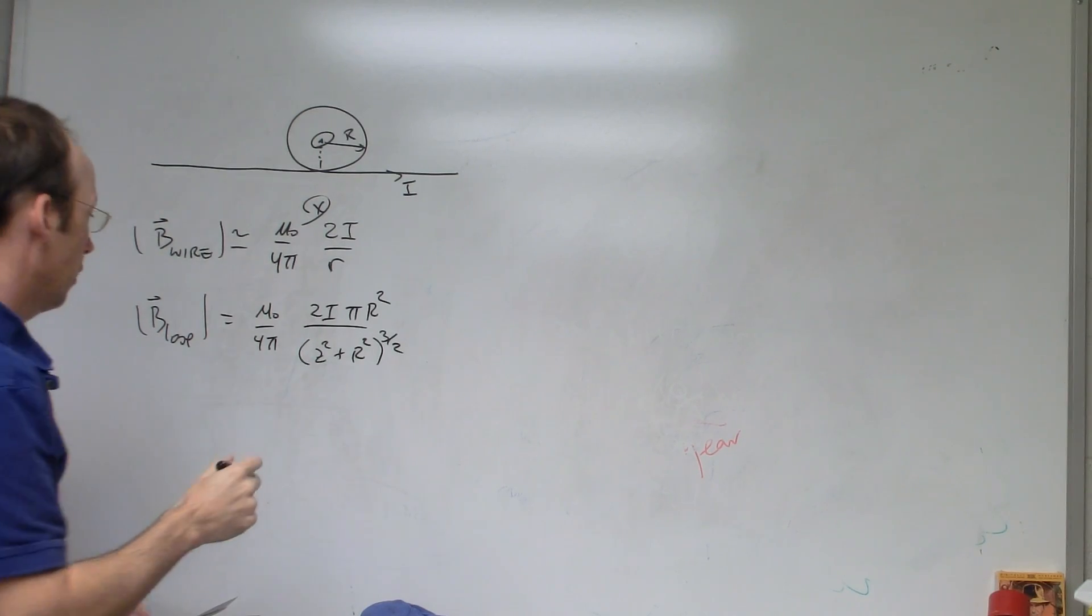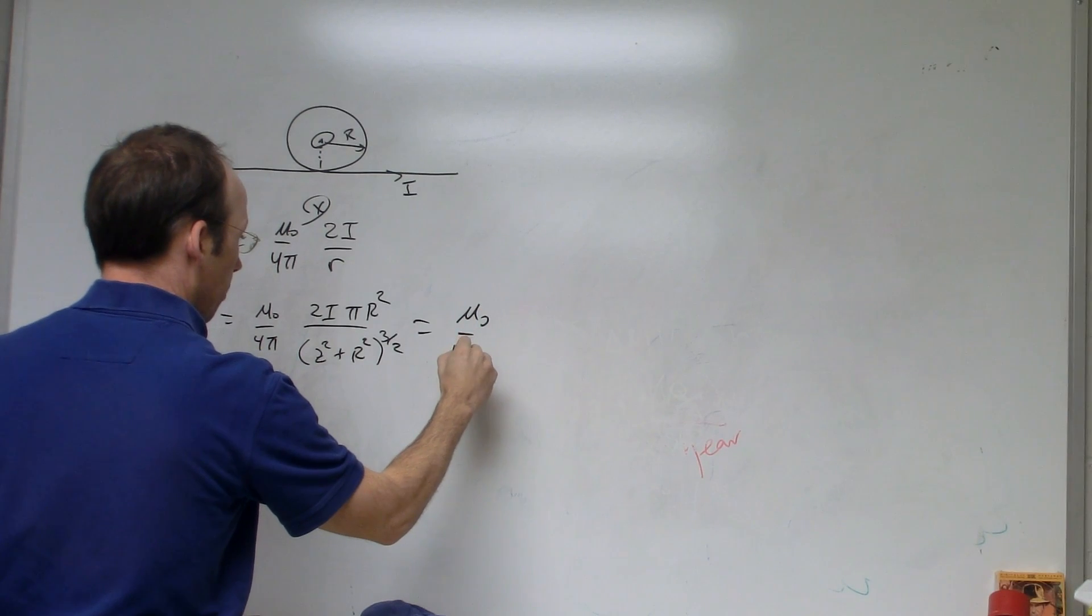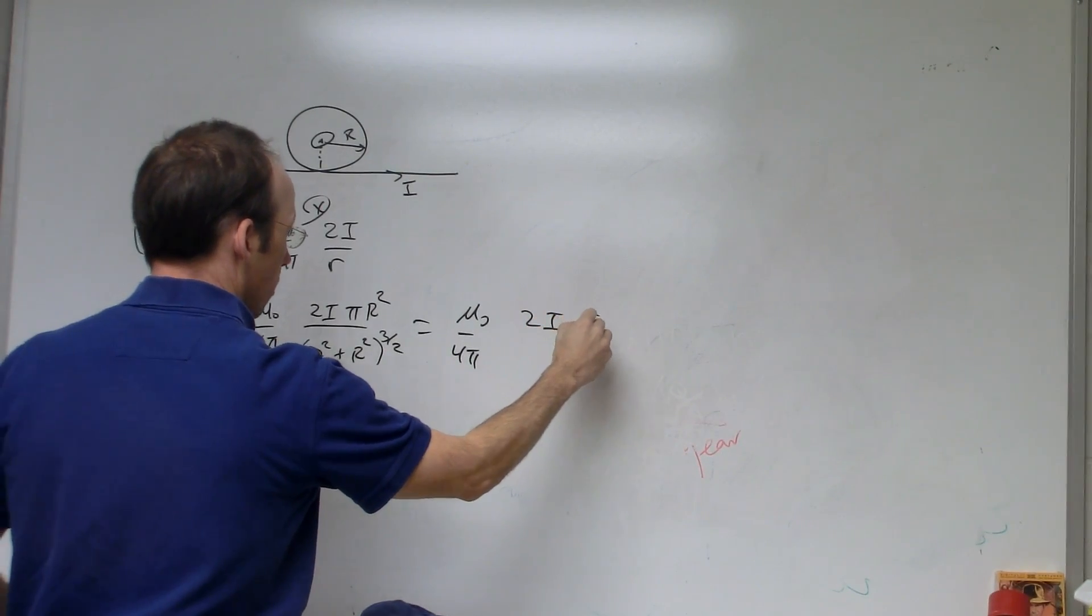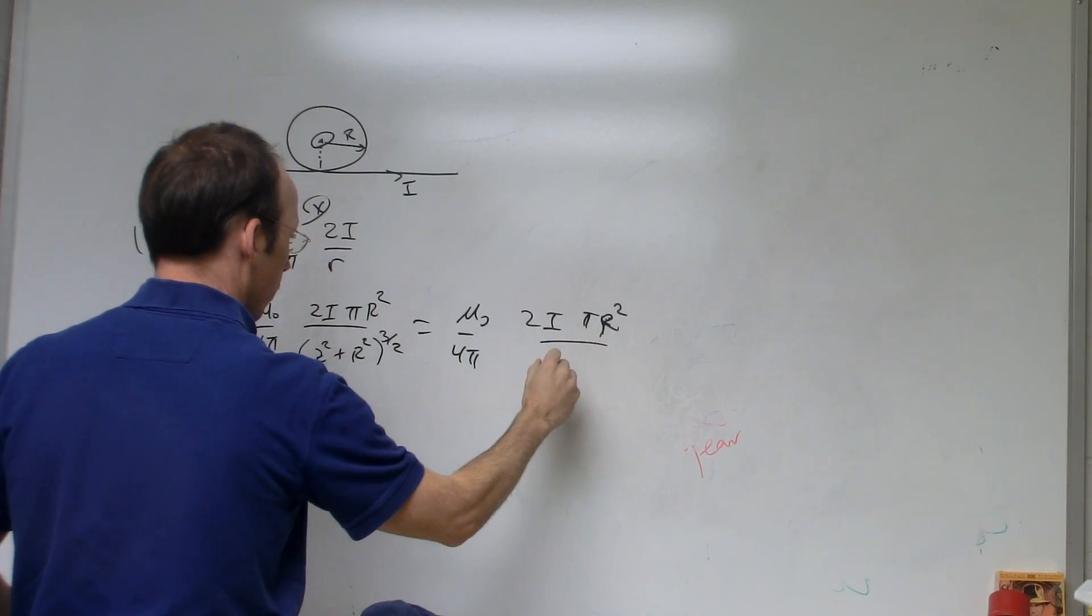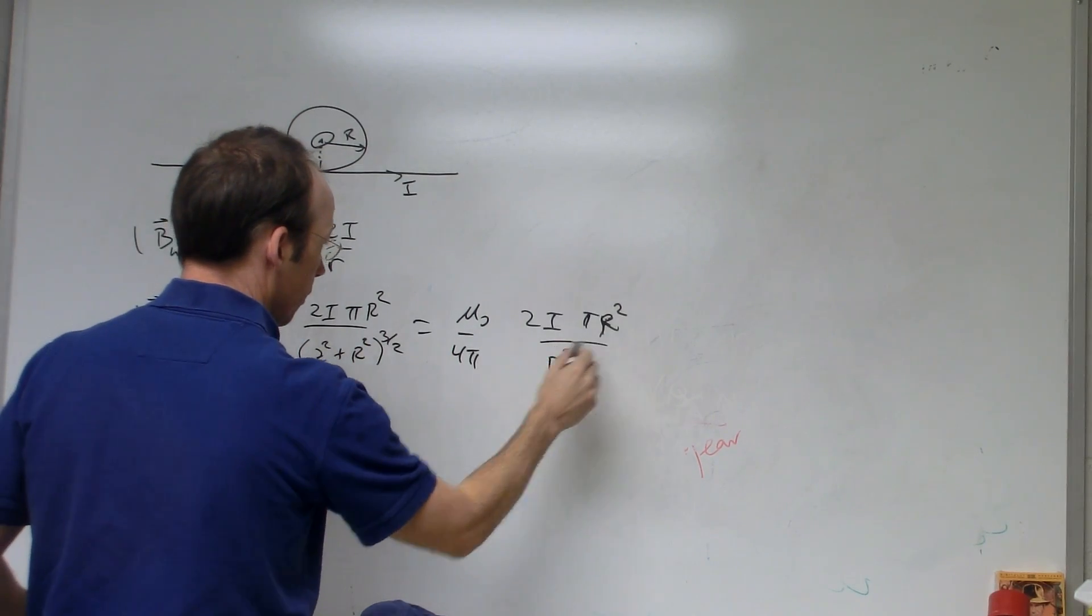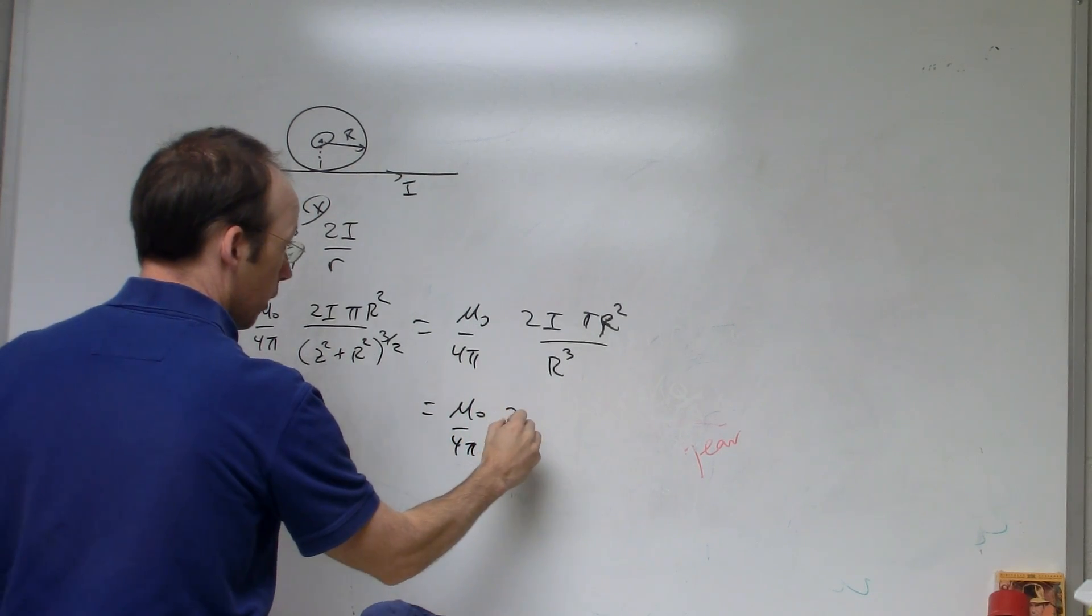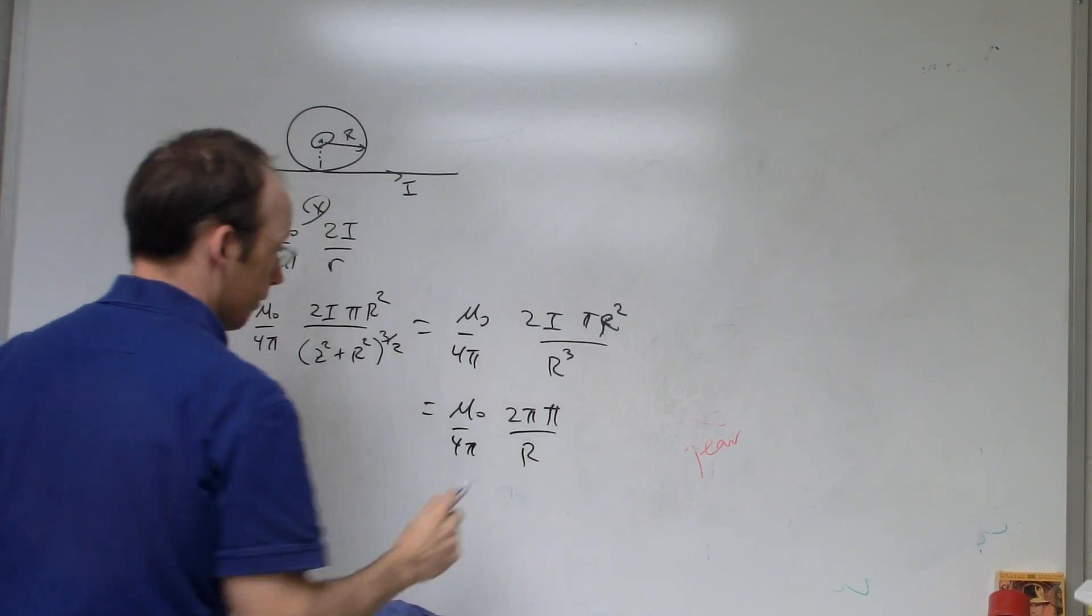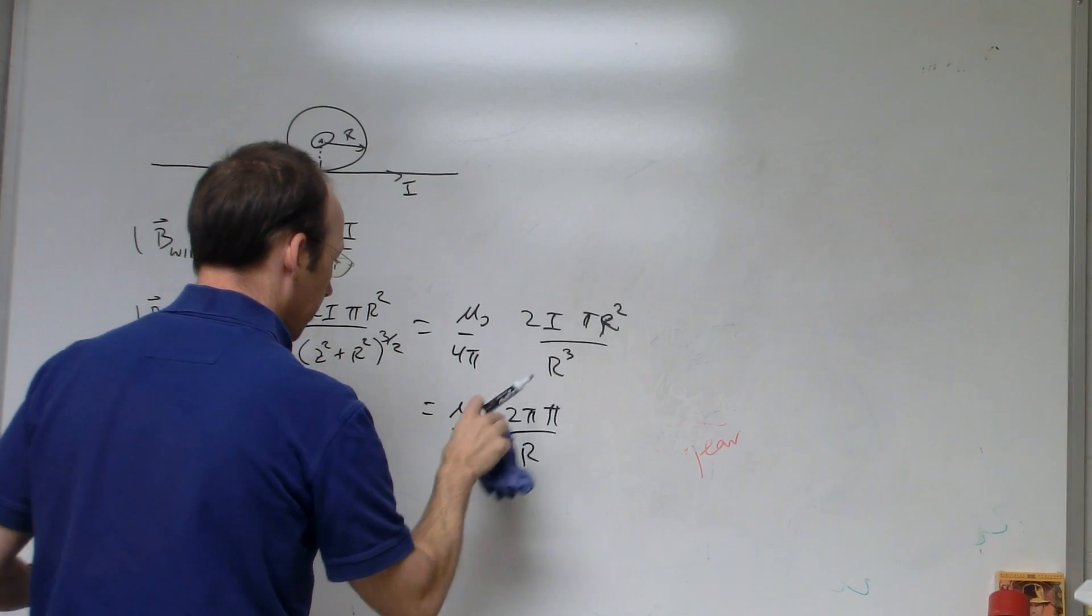So in this case, z is zero. So for us, we would have this as mu naught over 4 pi, 2i pi r squared over r squared to the 3 halves, which is going to be r cubed. So this is going to be mu naught over 4 pi, 2i pi over r.